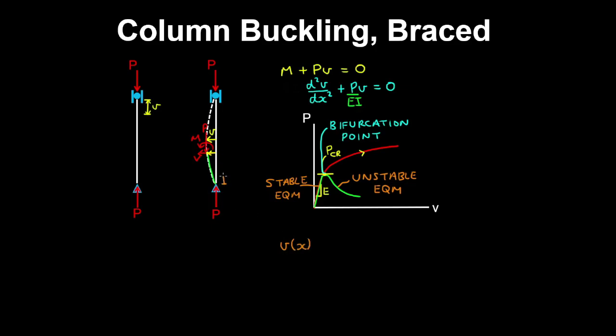We have X going up the column, is equal to a constant by sine lambda x, plus another constant by cosine lambda x. Lambda here is the square root of P on EI. I encourage you to try to solve this ODE yourself.